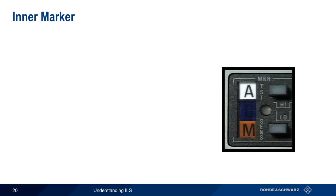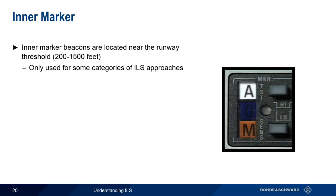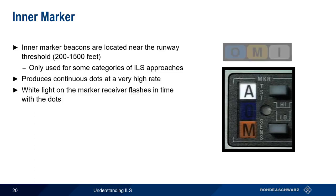The inner marker beacon is located near the runway threshold, although near is a somewhat broadly defined term, being anywhere from a few hundred to over a thousand feet. The inner marker is used only for certain categories of ILS approaches, so it's less common than the middle or outer markers. The sound produced by the inner marker is a rapid series of dots at a very high rate and high audio frequency. A white light flashes in time with the dots on the marker receiver. Note that in some cases, the letter A, for airway, is used instead of I on marker receivers.